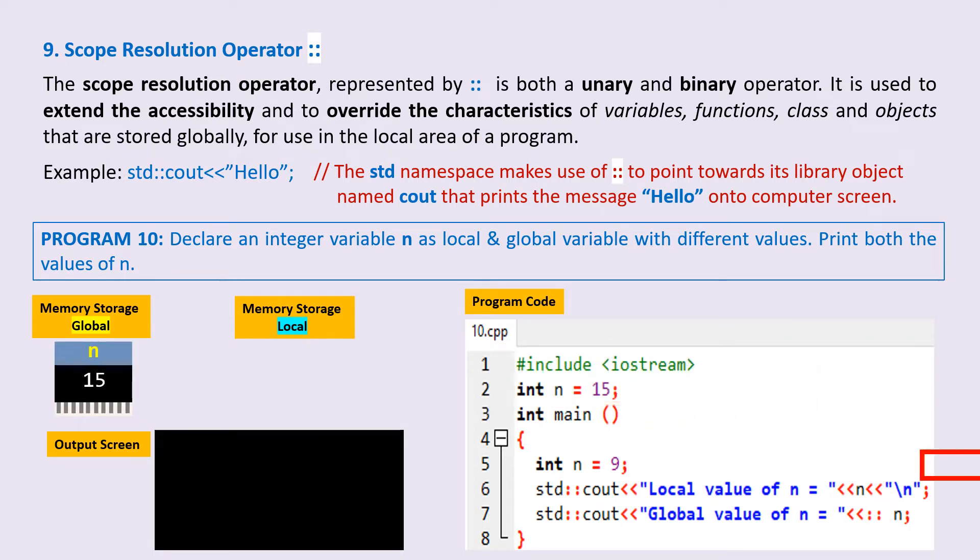We then declare another variable with same name n inside the main function. It's assigned value 9. So the memory storage unit for local variable named n stores 9.